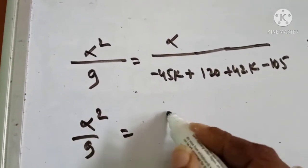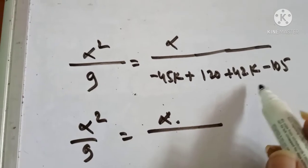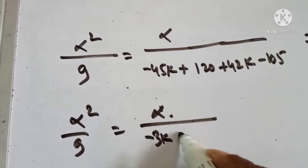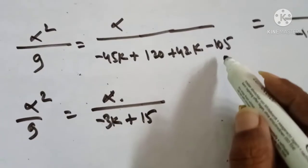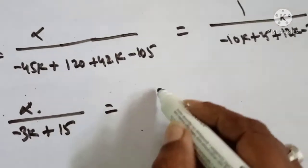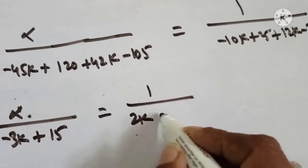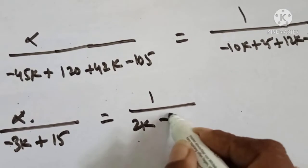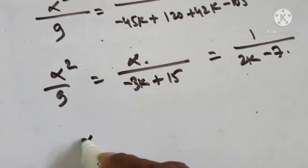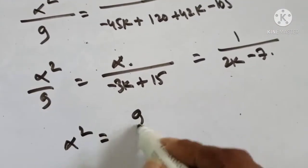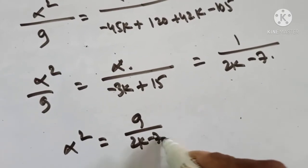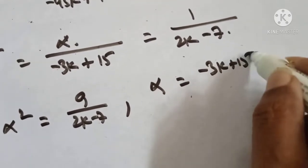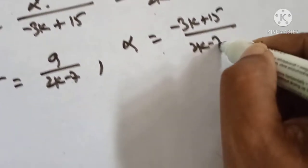So alpha squared by 9 equals alpha by (minus 3k plus 15) equals 1 by (2k minus 7). Therefore, alpha squared equals 9 divided by (2k minus 7), and alpha equals (minus 3k plus 15) divided by (2k minus 7).